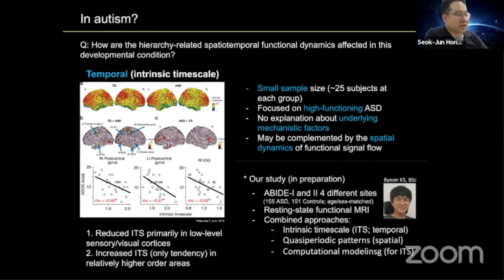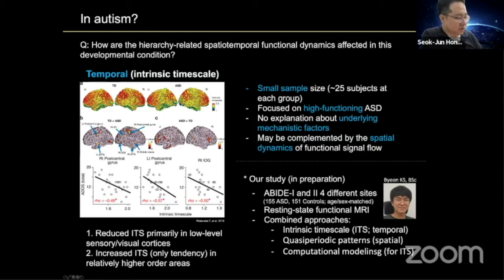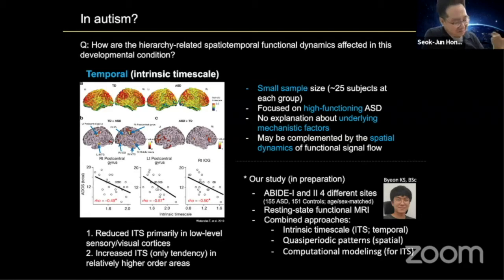We conducted a recent study — this is the PhD student in my lab — using a large sample of 306 individuals analyzing resting-state fMRI. We combined three different approaches: intrinsic time scale, quasi-periodic patterns, and computational modeling. This is still an ongoing project, so some findings may look incomplete, but I welcome your feedback.